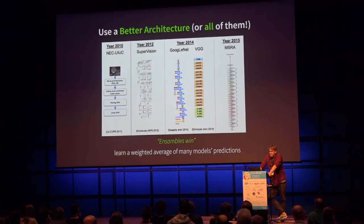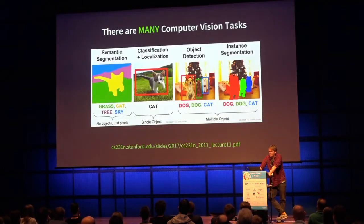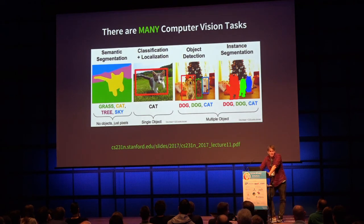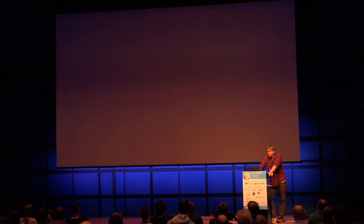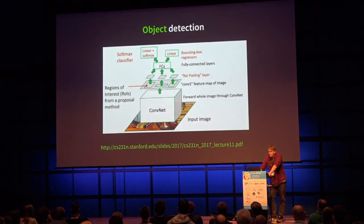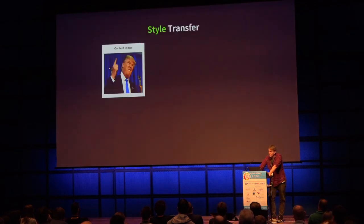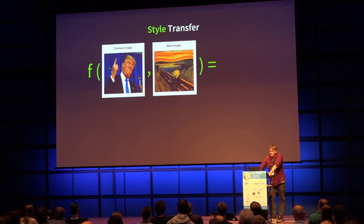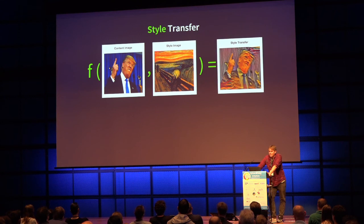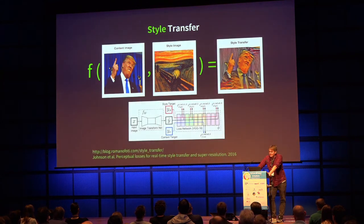More advanced methods: use a better architecture, or use an ensemble of all of them. Semantic segmentation labels each pixel with what's in it — it's a convolution followed by a deconvolution. Object detection uses a region proposal network — given annotated bounding boxes, you learn to predict bounding boxes for new images. Style transfer uses the bottleneck convolutional activation map for content, computes a Gram matrix on a style image, and minimizes the combined loss.